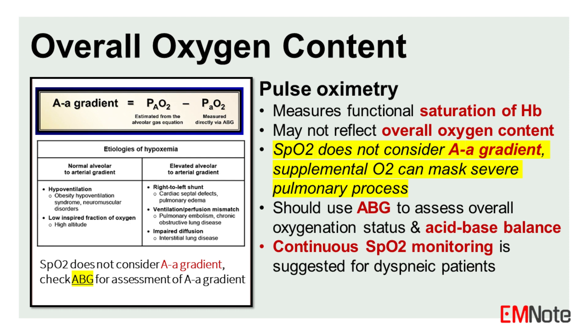Fluctuations in arterial oxygen tension can lead to rapid, unpredictable changes in SpO2 that may be missed by intermittent monitoring. Thus, continuous SpO2 monitoring is suggested for dyspneic patients.